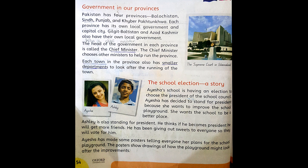Ashley has been giving sweets to everyone so they will vote for him. His plan is that if he is selected as president he will get more friends, and he distributes sweets among the students so that in return they will give him votes. Meanwhile, Aisha has made some posters telling everyone her plans for the school playground.